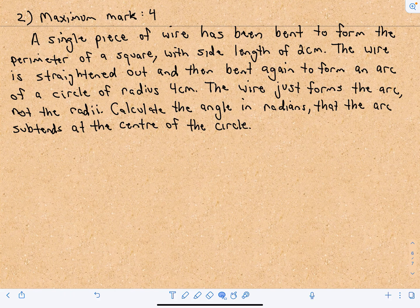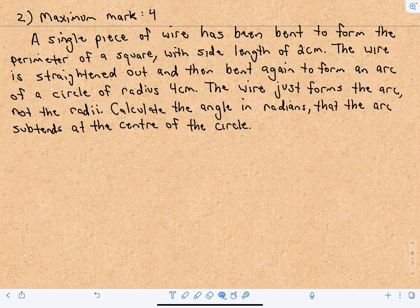Okay, so this will be the second question from paper one of the sample IB exam. A single piece of wire has been bent to form the perimeter of a square with side length of two centimeters, and the wire is straightened out and then bent again to form an arc of a circle of radius of four centimeters.